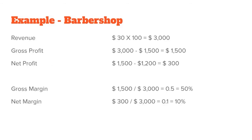Moving on to gross margin and net margin: when you know your revenue, gross profit, and net profit, you can calculate these margins. Gross margin is simply gross profit divided by revenue; net margin is net profit divided by revenue. In the barbershop case, gross margin is 50% and net margin is 10%. This means after all costs are deducted, 10% of whatever we sell is what we keep as profit. These two metrics are very important to see how profitable your business actually is.